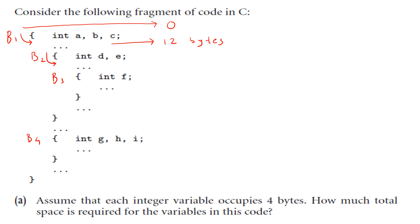Then you enter into another block, block two, which is defined in block one. In block two we allocate memory for two more variables d and e. So the total memory will be 12 plus 8, which is equal to 20 bytes — 12 bytes for a, b, c and the next 8 bytes for d and e.